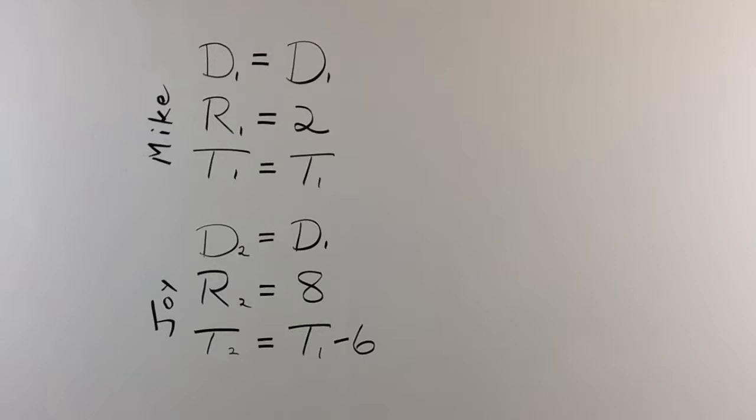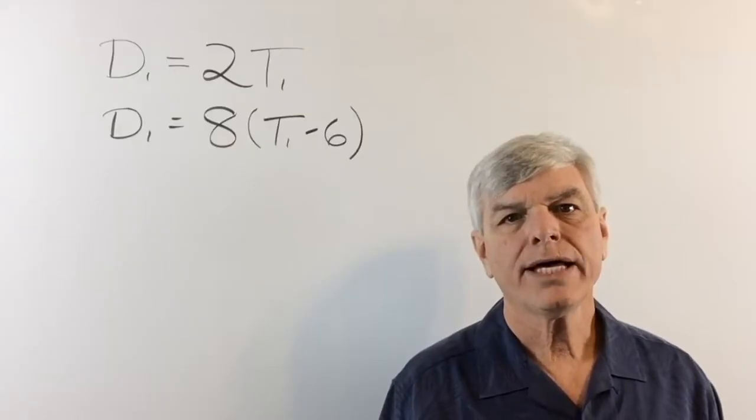And let's see Joy's formula. Joy is D2 and it equals 8 times parenthesis T1 minus 6. Okay, good.